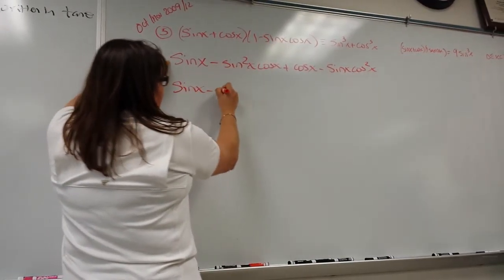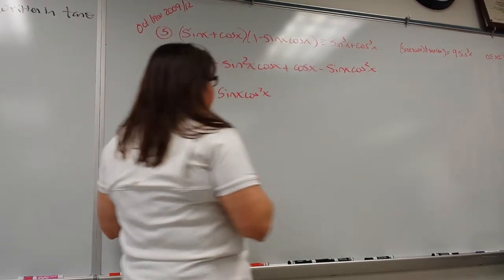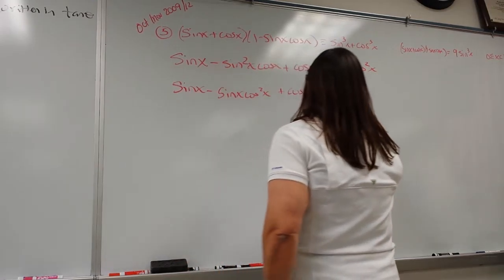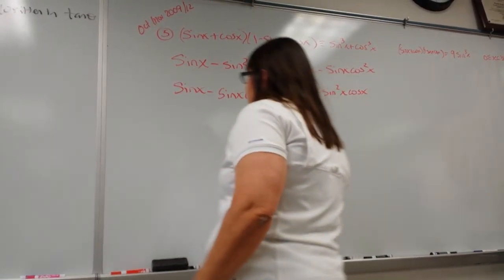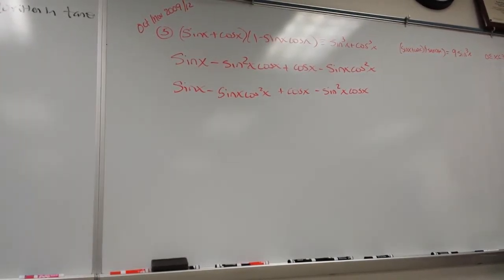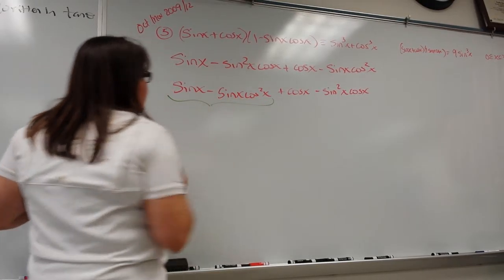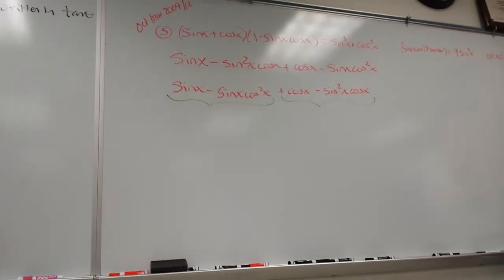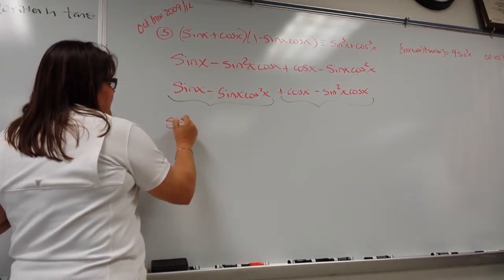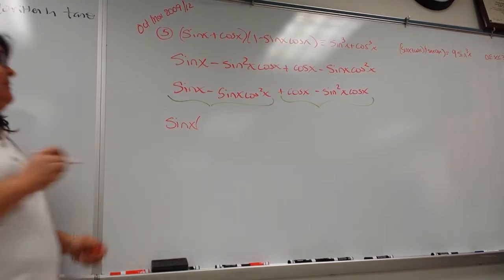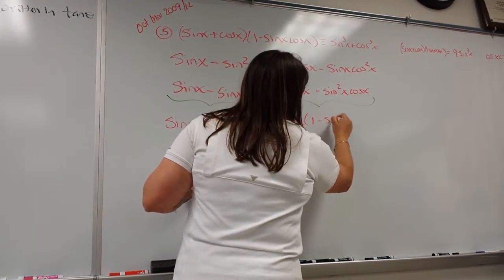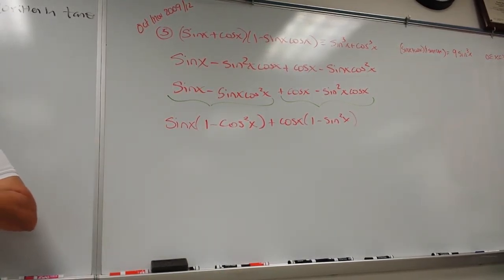And do the same thing with the cosine. I'll put plus cosine next because it's nicer to have a positive, and then the one with just cosine. Using the commutative property of addition, I can rearrange. These first two terms have a sine in common — take out the sine, and you're left with one minus cosine squared. And those two have cosine in common. One minus cosine squared equals sine squared; one minus sine squared equals cosine squared.